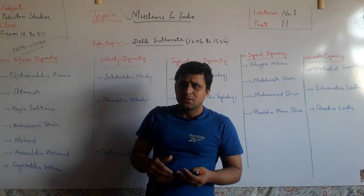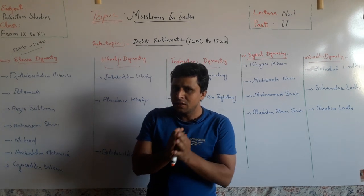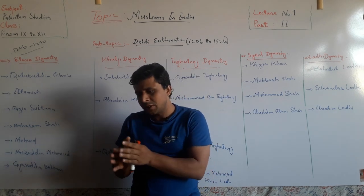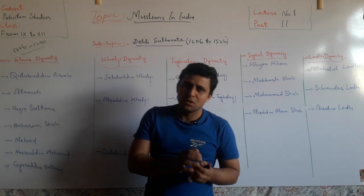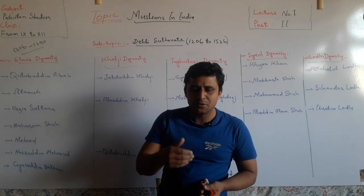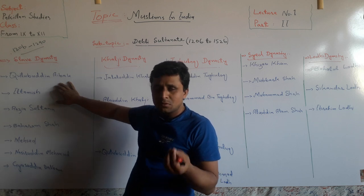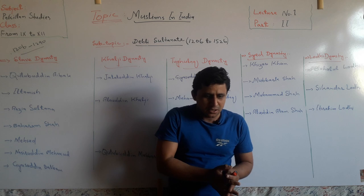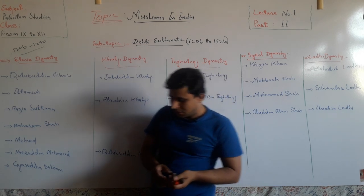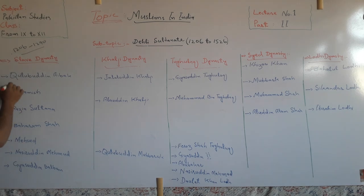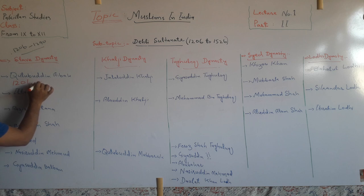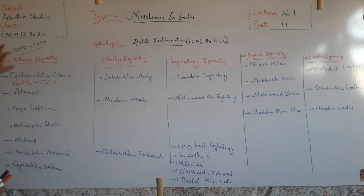After the Battle of Tarain in 1192, Qutbuddin Aibak was appointed as governor and viceroy of Muhammad Gori in Delhi. After the death of Muhammad Gori, Qutbuddin Aibak established an independent Muslim state in Delhi. He ruled from 1206 to 1210, when he died. The Slave dynasty is also called the Mamluk dynasty.